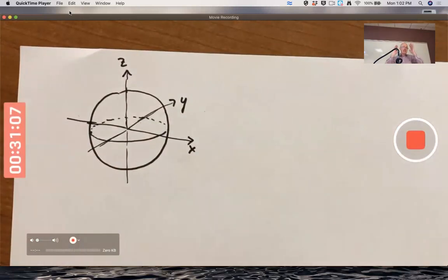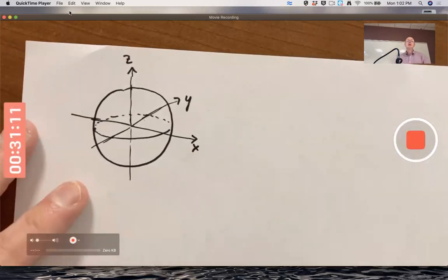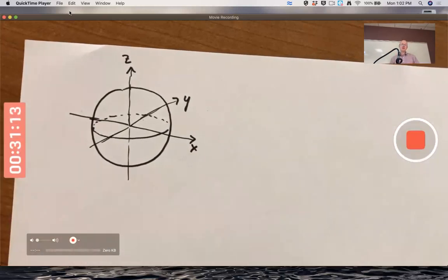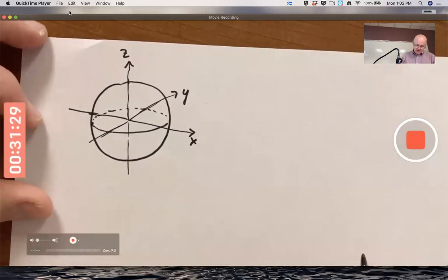Some people look at this and it just looks two-dimensional to them. Some people, oh yes, I see the three-dimensional picture here. Okay, you can see it, you can sort of feel it in your gut. That's a three-dimensional picture that I'm looking at. I'm not even trying to draw with perspective in the usual sense of the word. Okay, so what are we after here?